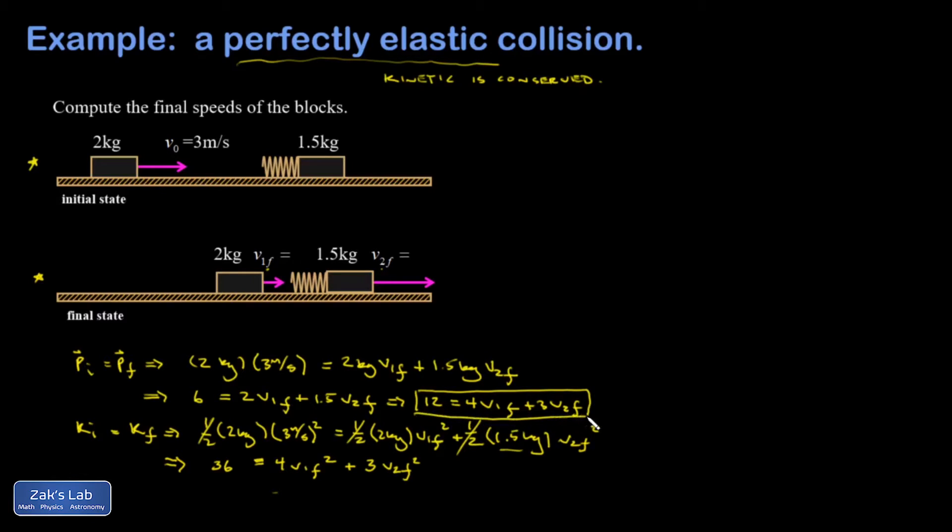So now I've got two equations and two unknowns, and unfortunately the system of equations is non-linear, so I can't use elimination but I can still use substitution to deal with it. And it's always going to be easier in a problem like this where I have a stationary target and a block approaching it if I go ahead and solve for v2 final first.